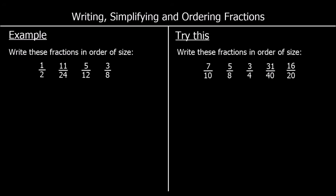Writing fractions in order of size. Here are four fractions: one half, 11 out of 24, five twelfths and three eighths. One way of writing them in order is to make sure the denominator — the bottom number — is the same for all of them. I can do that by making them all out of 24, since 24 is in the two times table, the twelve times table and the eight times table.